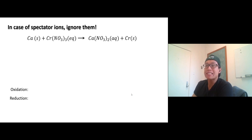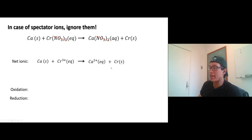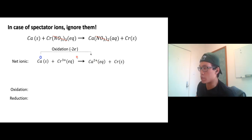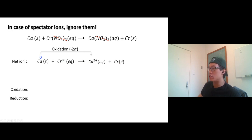In the case of spectator ions, just ignore them. I'm going to rewrite a net ionic equation. We have a molecular equation, but spectator ions don't do anything — just cancel them out. Now let's check the electrons. Calcium on the left side is zero, becomes calcium two plus — increase in oxidation number, that's oxidation, so two electrons out. Chromium three plus becomes chromium metal, three plus to zero — decrease in oxidation number, that's reduction, so three electrons in.